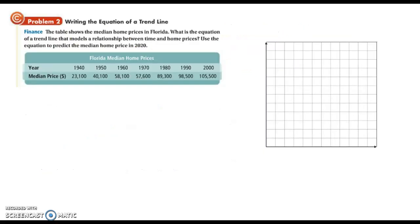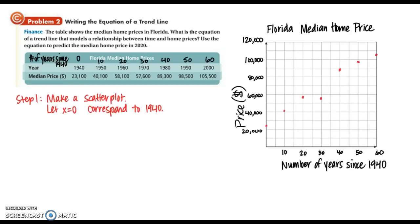In example 2 we're going to learn how to write the equation of a trend line. The table shows the median home prices in Florida. What is the equation of a trend line that models the relationship between time and home prices? Use the equation to predict the median home price in 2020. We have 7 different years with corresponding median home prices. On the x-axis, instead of using the actual years, I'm going to let x equals 0 correspond to 1940 — this will make it easier to graph. Now that we have our points plotted and our graph titled and axes labeled, we are ready to draw a trend line with approximately equal numbers of points above and below the line.